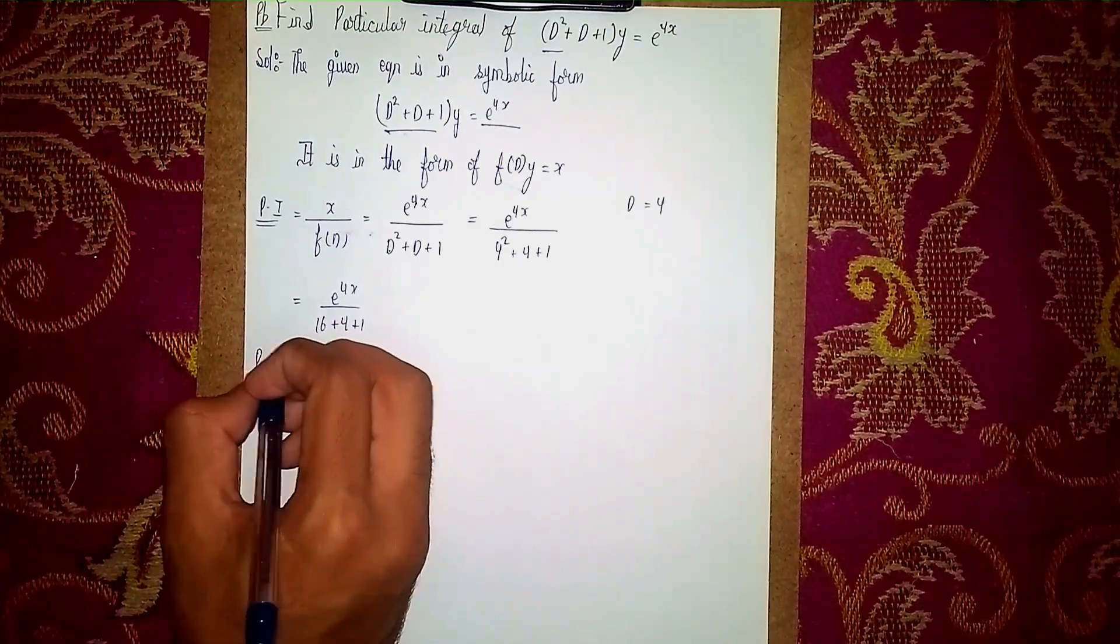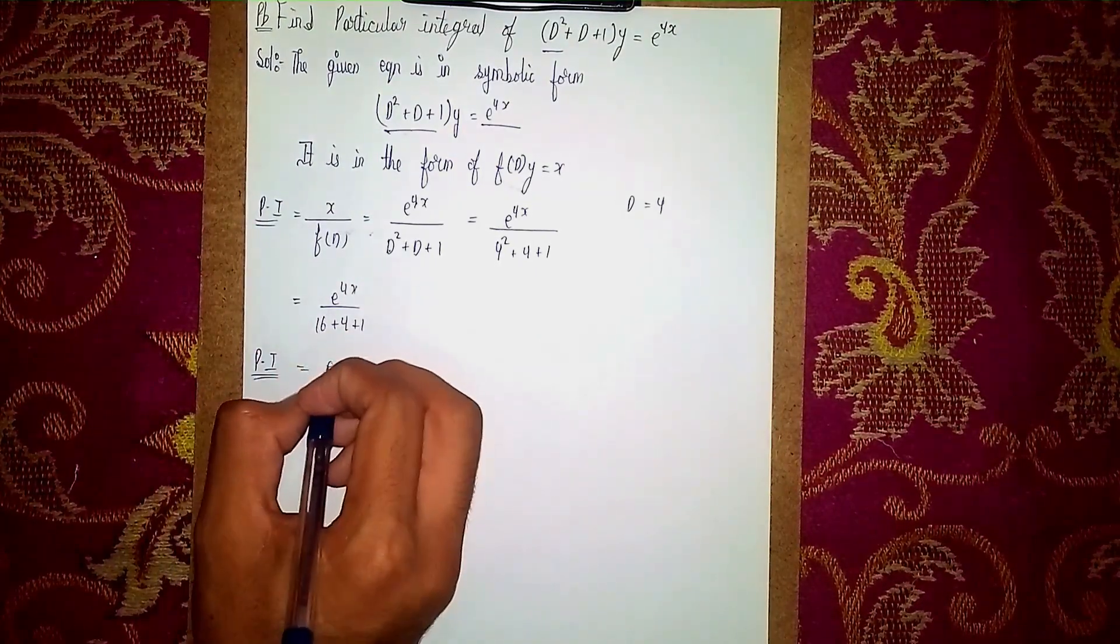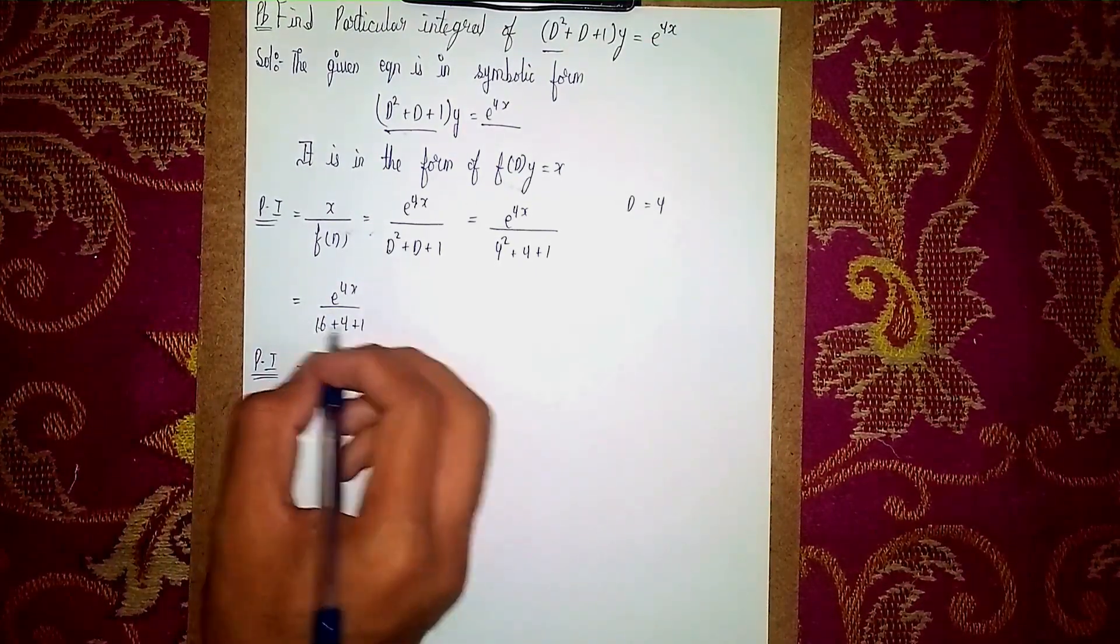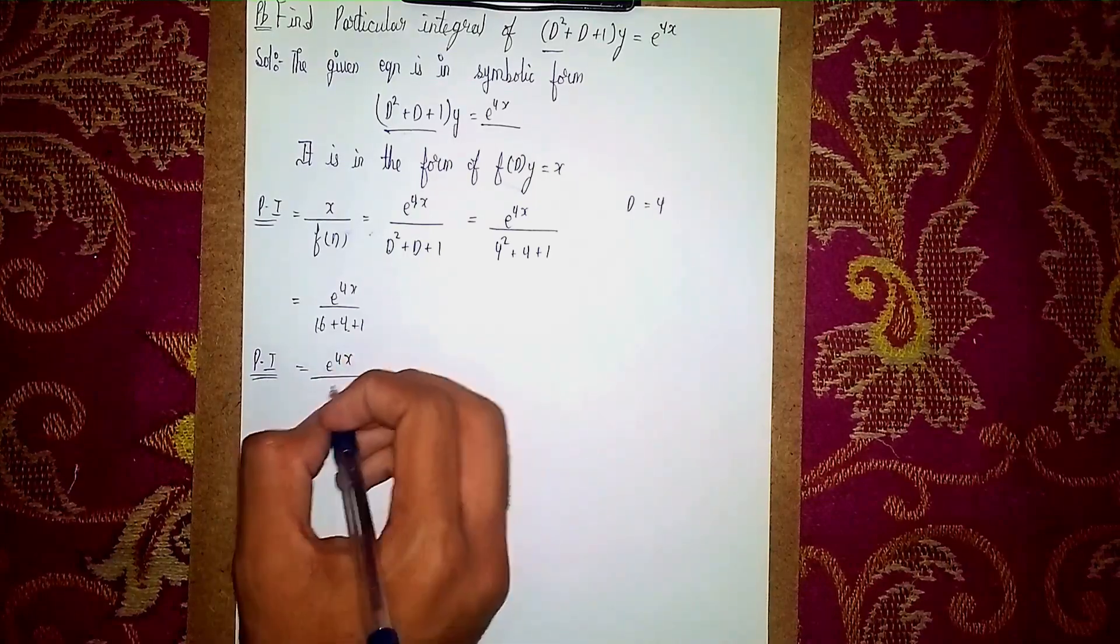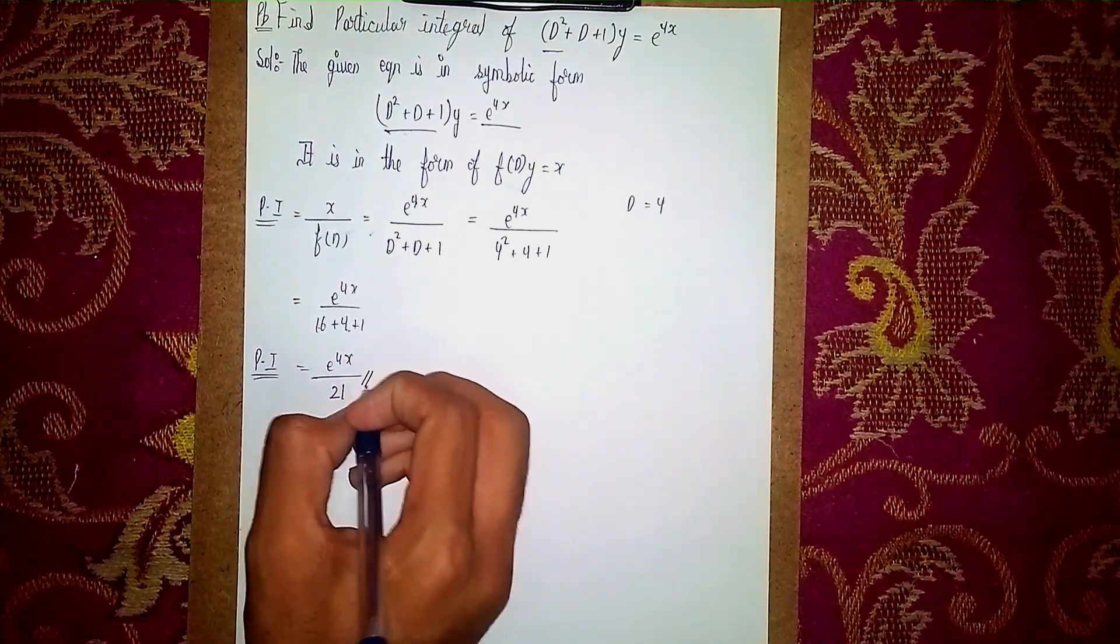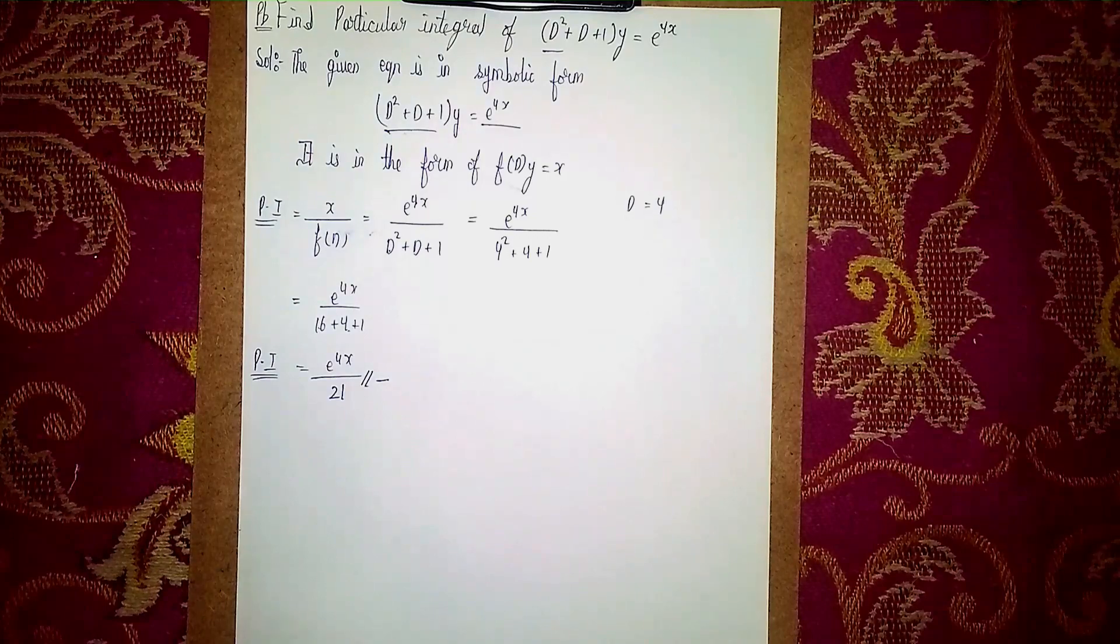Then our particular integral is equal to e power 4x by 16 plus 4 is 20, 20 plus 1 is 21. So this is our particular integral, this is our answer. Thanks for watching.